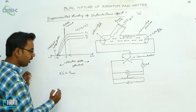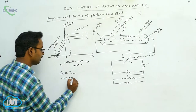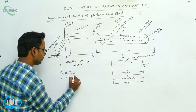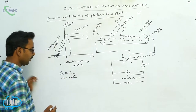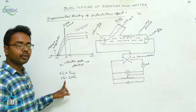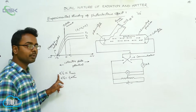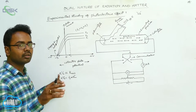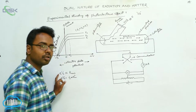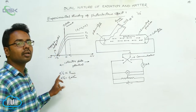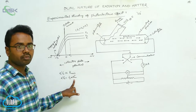This can also be written as eV₀ is equal to half m Vmax squared. Note that this V is a potential and the other V is a velocity. At stopping potential V₀, the work done on electrons is equal to the maximum kinetic energy of the electrons, so eV₀ equals half m Vmax squared.